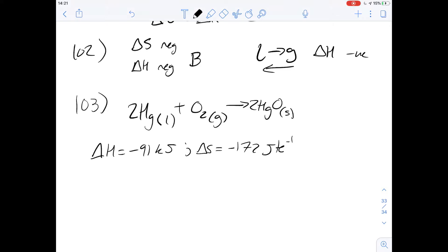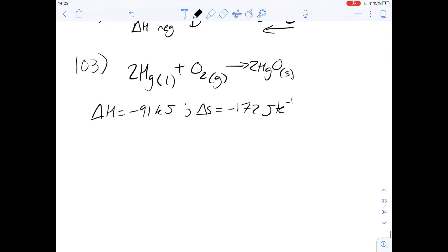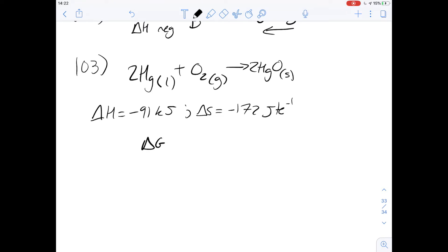So question 103 talks about how mercury can react with water, and we're asked whether or not this will occur spontaneously, and if so, at what sort of temperature. We've got an equation of delta G equals delta H minus T delta S.